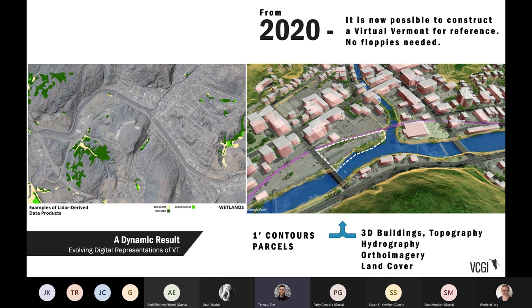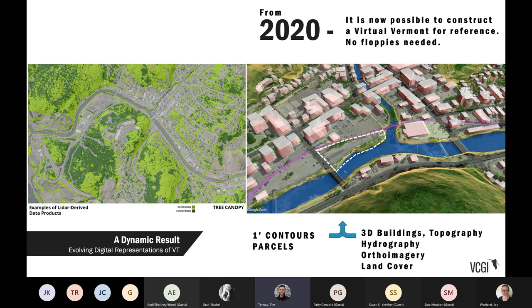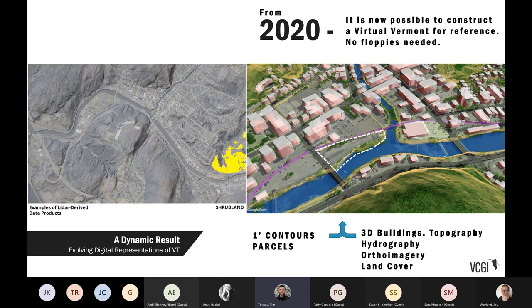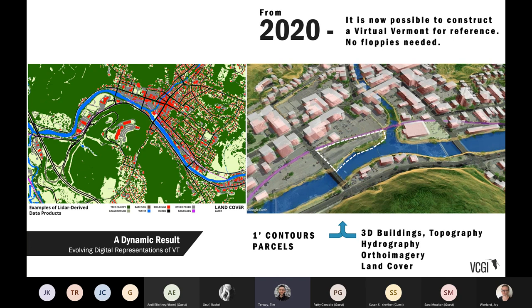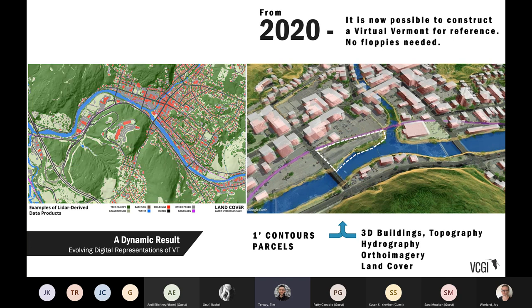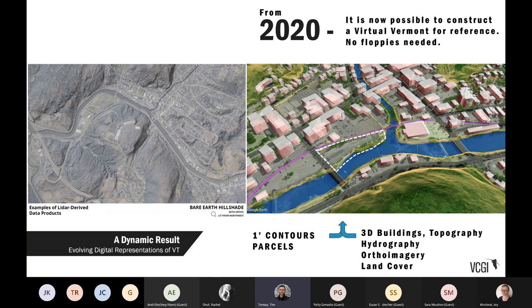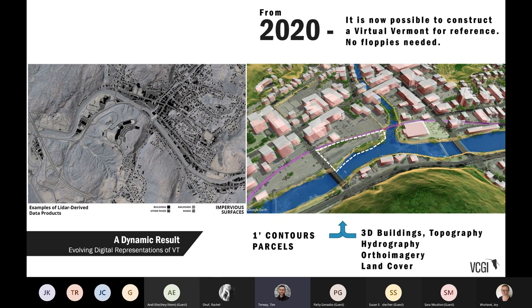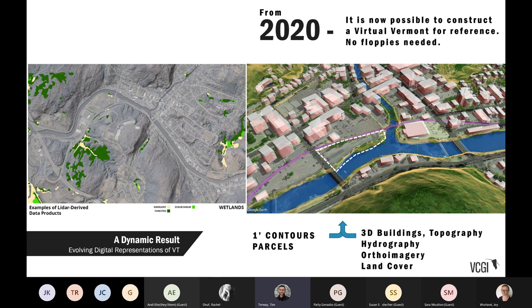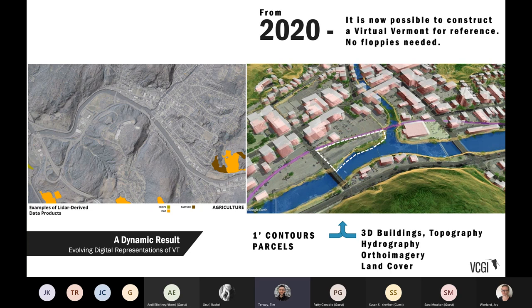From 2020 onward, it's possible to construct what we might consider a virtual Vermont for reference — no floppy disk needed. You can combine multiple things we have available, whether topography, hydrography, ortho imagery, and really get a fairly current and detailed picture — a virtual representation of the state of Vermont. You're looking on the right-hand side at the confluence of the Winooski River in downtown Montpelier. On the left you see an animation of different layers being stacked over and on top of each other. We can now, fairly close to real time, show how Vermont looks virtually from the comfort of your internet connection.